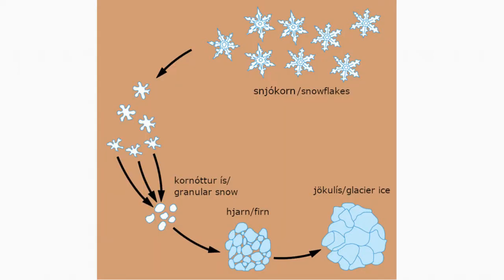Once snow accumulations survive a summer melt period, snow eventually becomes packed into a firn, which is the medium between snow and glacial ice. Then once enough weight is put on top of the firn, after multiple years of snow surviving the summer melt, it becomes so packed that all air bubbles are pushed out and glacial ice is formed. Eventually, once there is enough glacial ice, the glacier will begin to flow outwards and downwards under the pressure of its own weight.